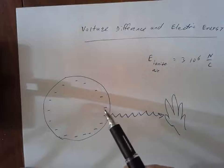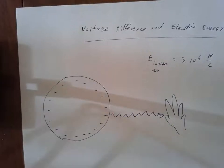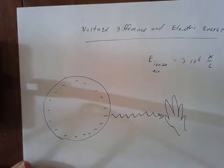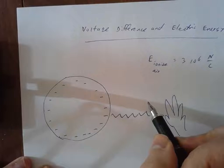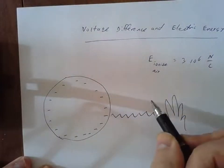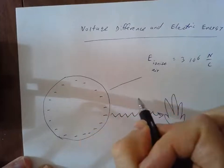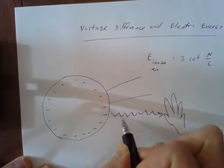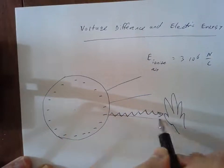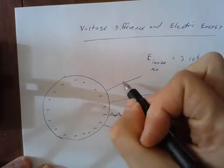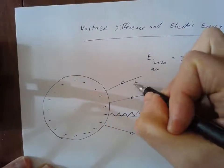I'm going to draw the direction of the electric field. We have a negatively charged Van de Graaff, and we know that a positive test charge would be attracted towards it at any location. So I'm going to draw the electric field lines coming in directly towards the center of the Van de Graaff — just some of them. That's my electric field direction.